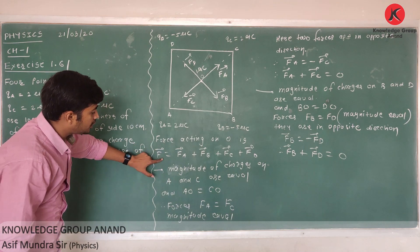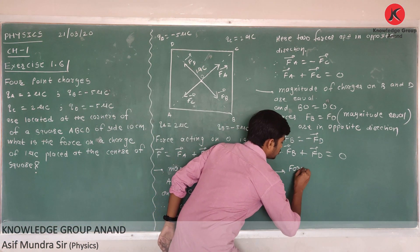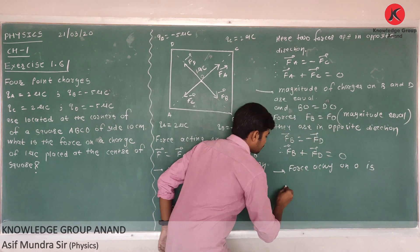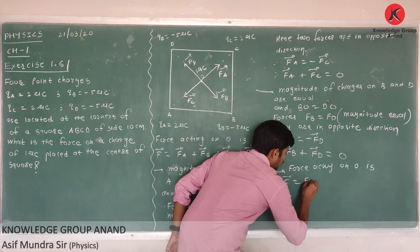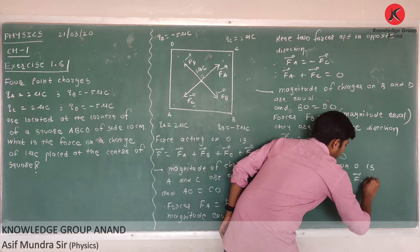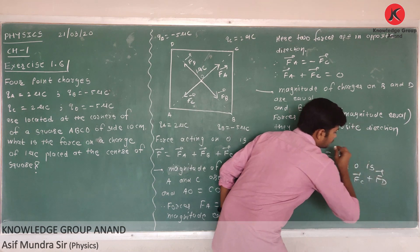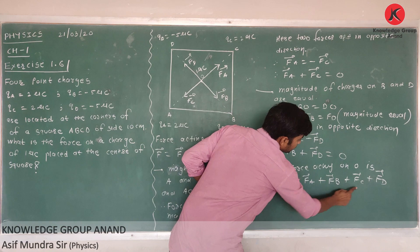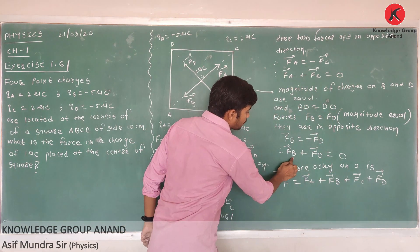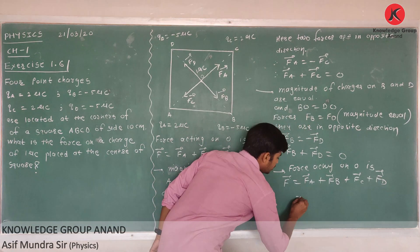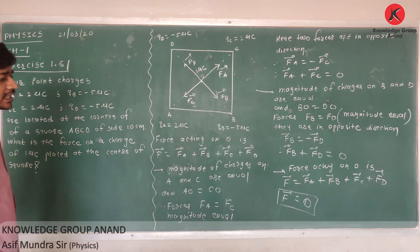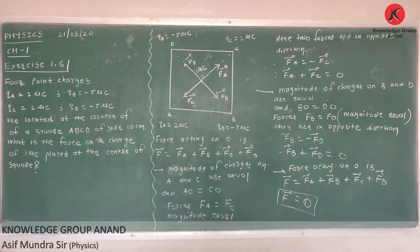Now we find the total force acting on O. Force F = FA + FB + FC + FD. Since FA + FC = 0 and FB + FD = 0, the total force acting on O is zero.